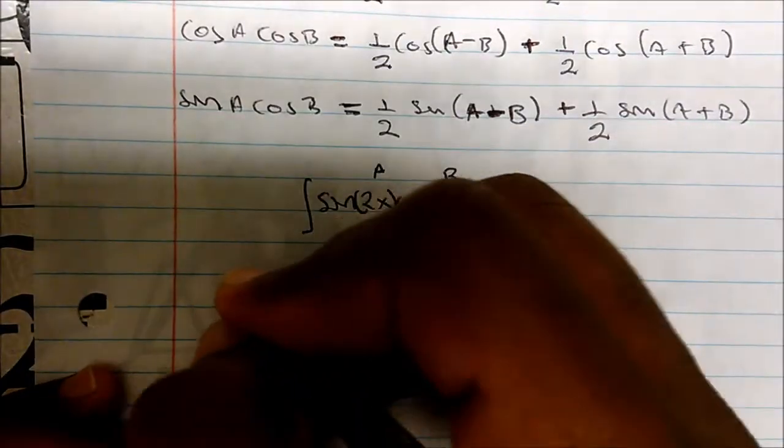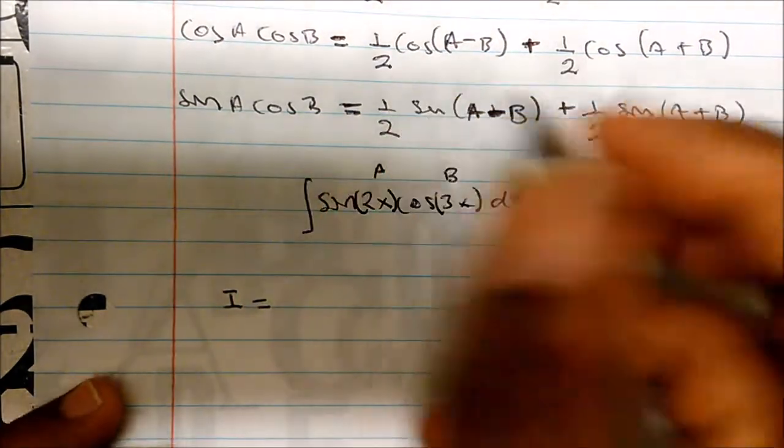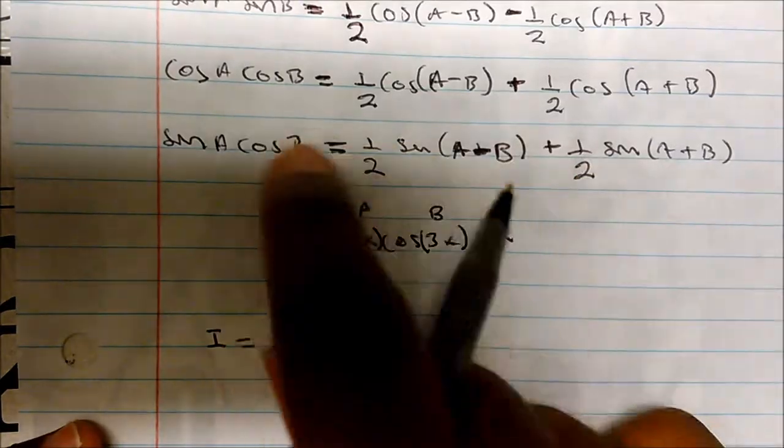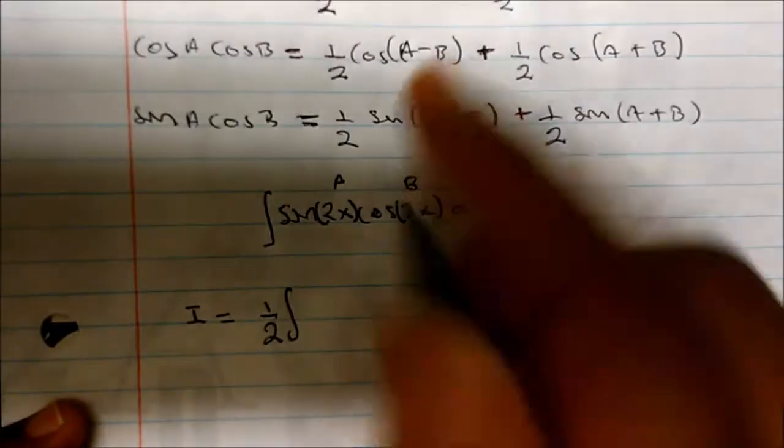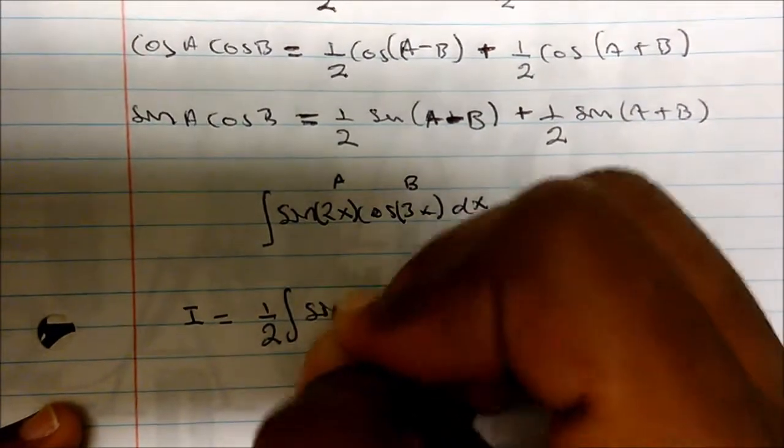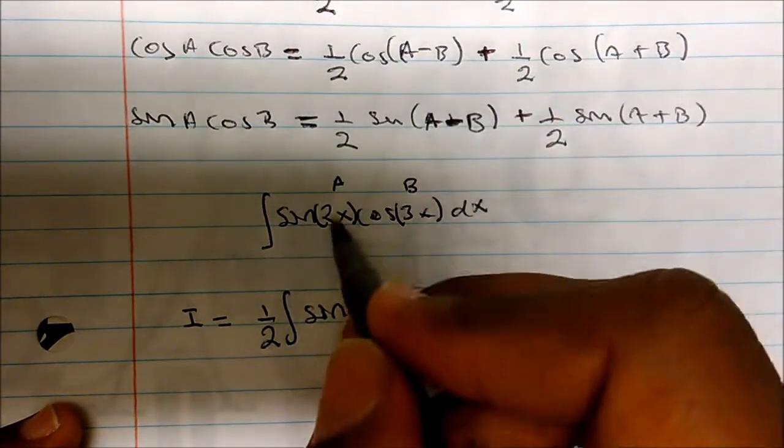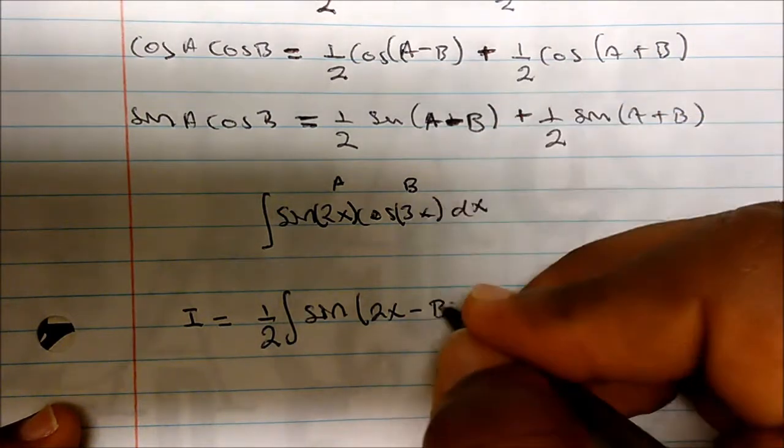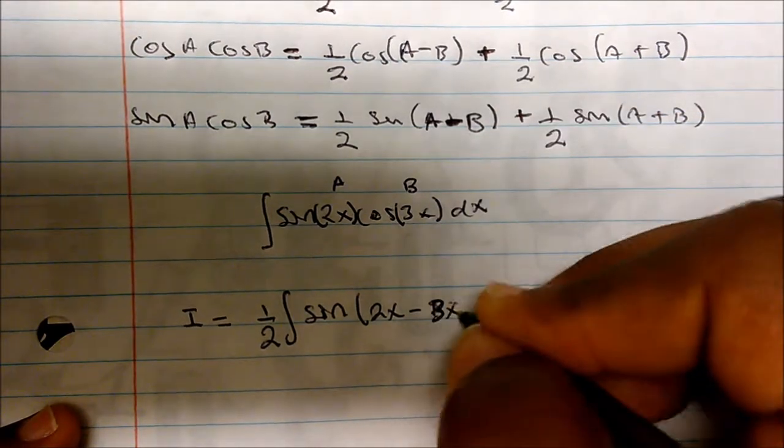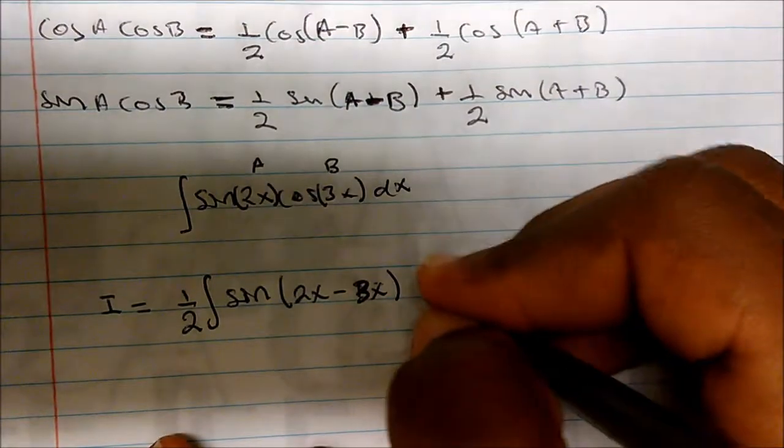And so if I look at this, the integral now is actually going to be given by - well notice I have a one half, and so I can factor out a one half, so this becomes integral of one half. Well we have sine of a minus b, so a is 2x minus b, which is 3x, plus -